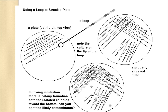There are two main streaking approaches. The first is the zigzag technique, where the culture is transferred at one place and continuously streaked in a zigzag manner. The second is the quadrant method, where the microorganism is transferred at one position and then streaked across the first, second, third, and fourth quadrants successively.